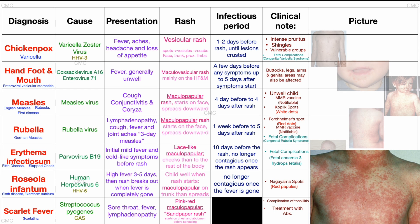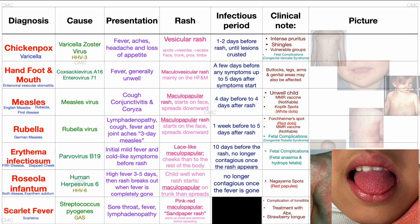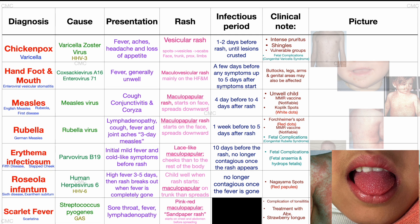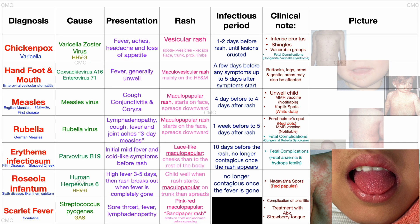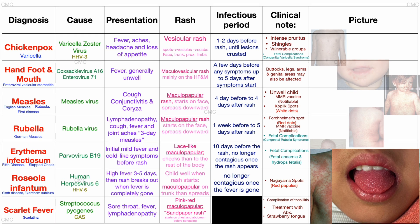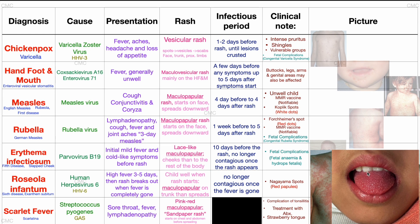This is also yet another condition with an enanthem — a rash inside the body — known as strawberry tongue, which initially might present as a yellowish-white coating on the tongue, but later the coating disappears, leaving a beefy, red strawberry tongue.